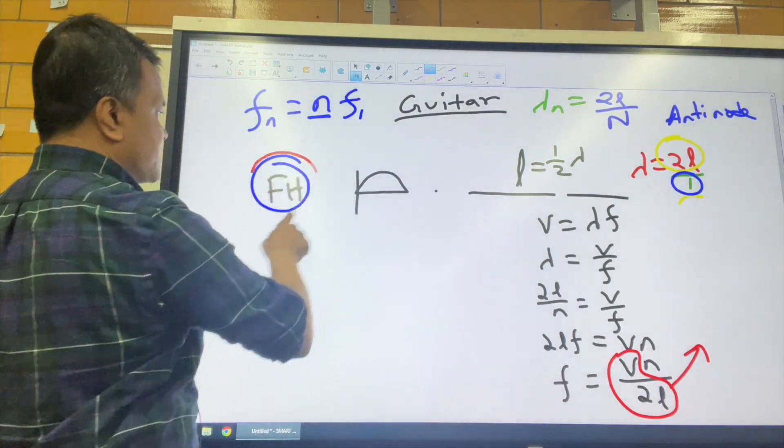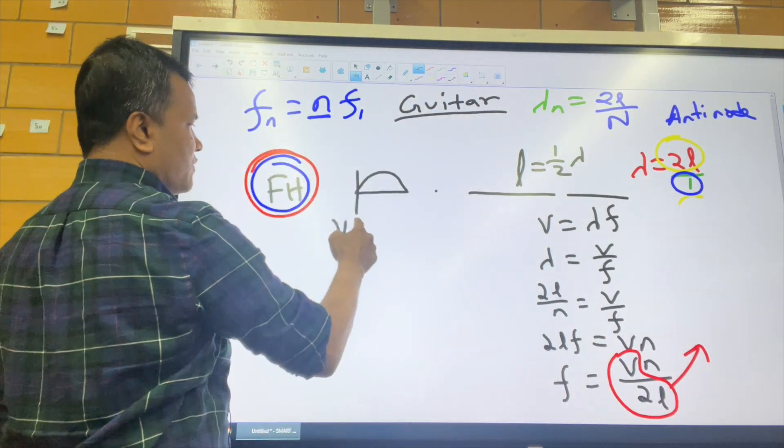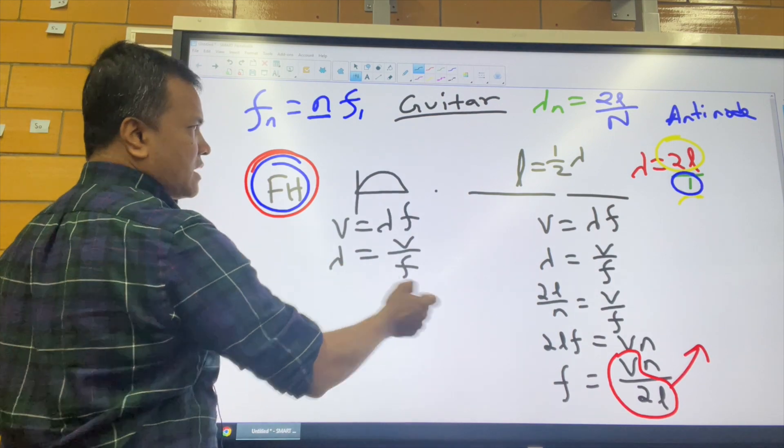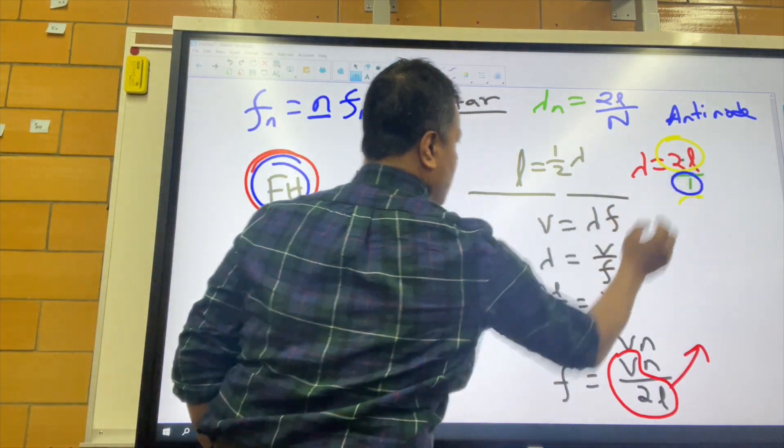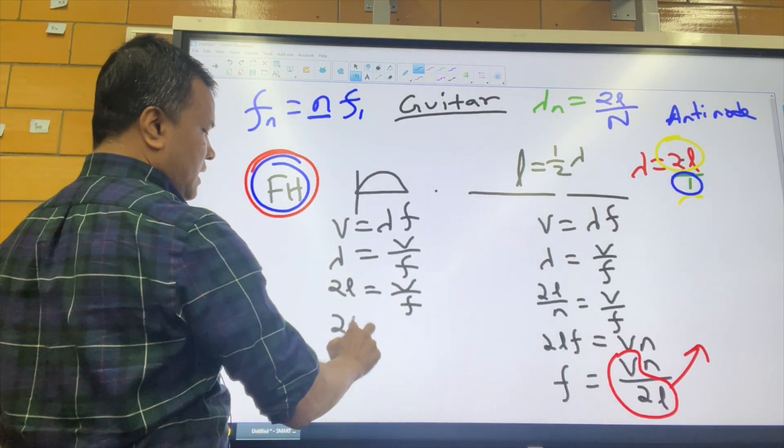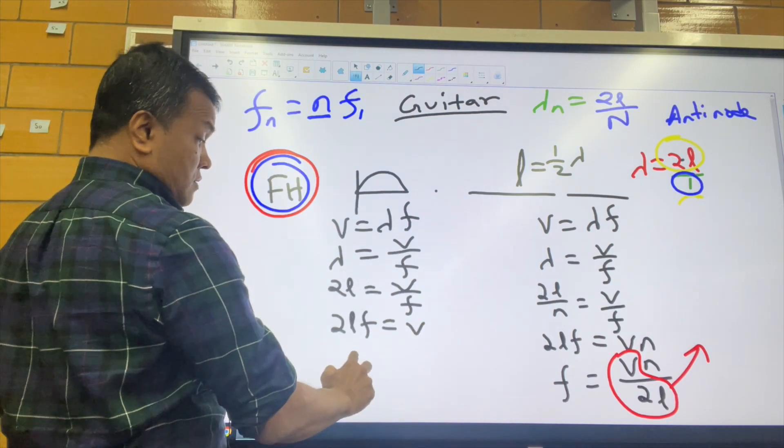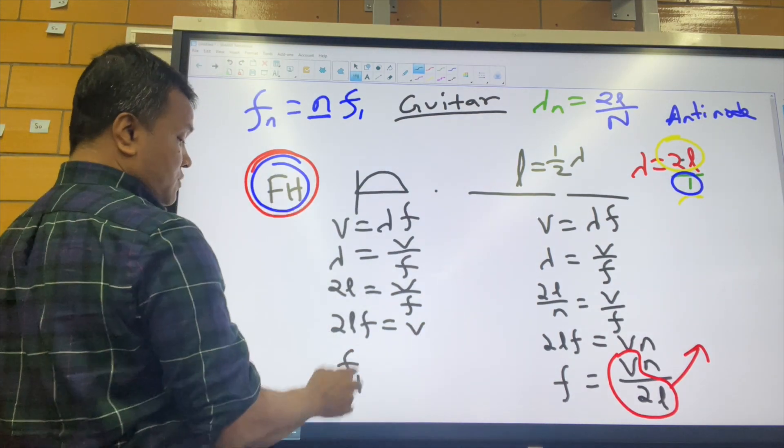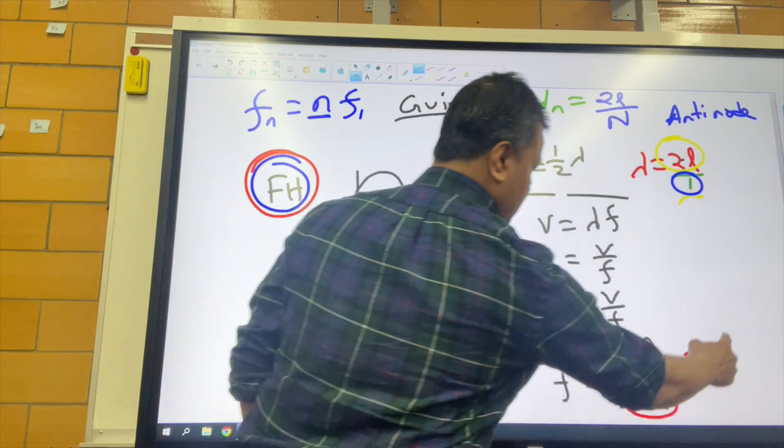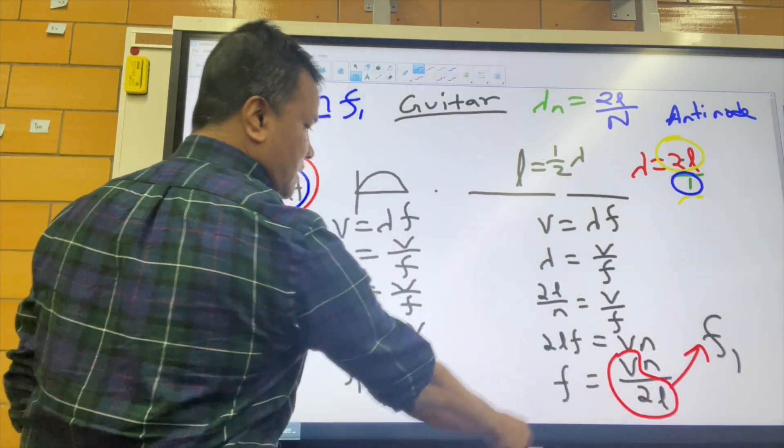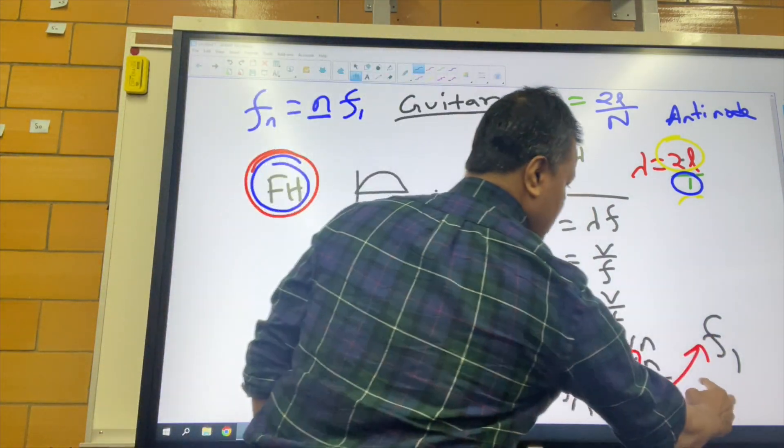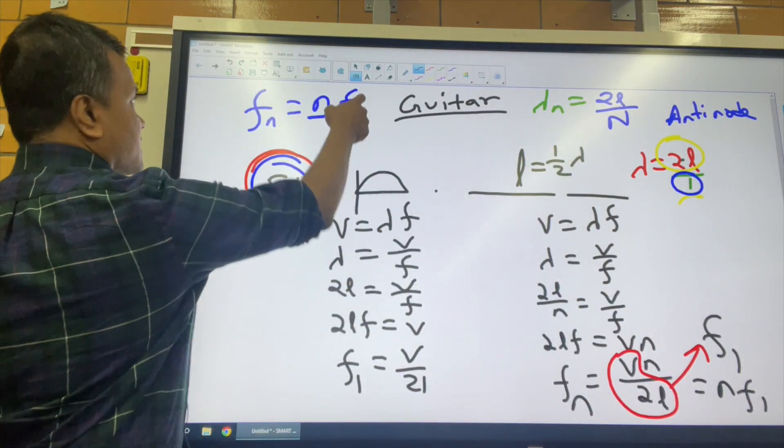Let's come to the first harmonic. For first harmonics, velocity is lambda times frequency. Lambda is 2L. So 2Lf equals V, and f equals V over 2L. This is the first harmonic. So V over 2L is the first harmonic. The frequency of n-harmonic is n times f1. Now you're going to solve a problem using this.